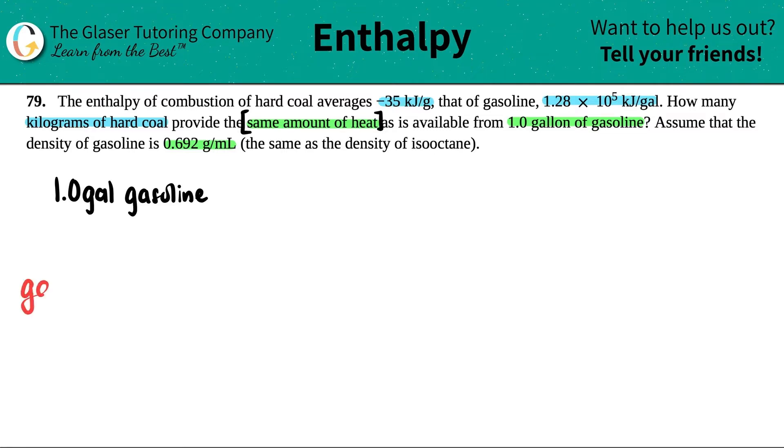For the gasoline, they told us two things. They gave us a density of gasoline, 0.692 grams per mil. And then they also told us that the heat of combustion for the gasoline was 1.28 times 10 to the fifth kilojoules per gallon.